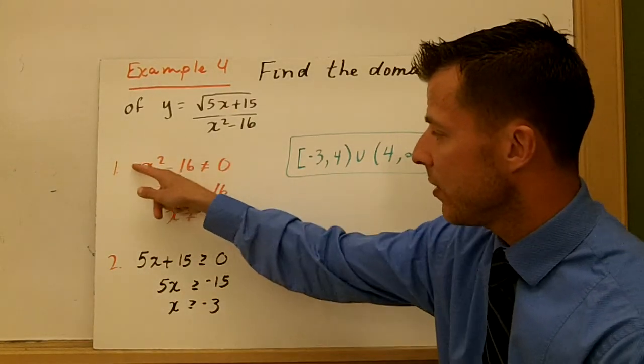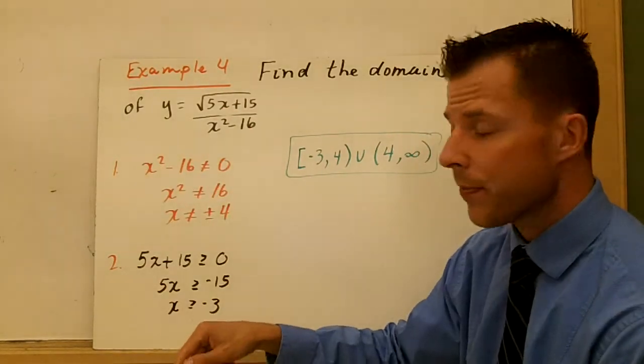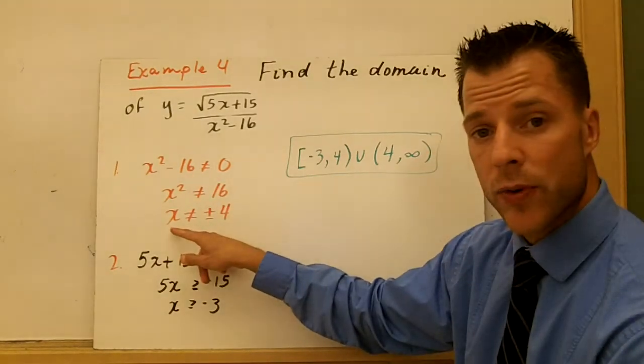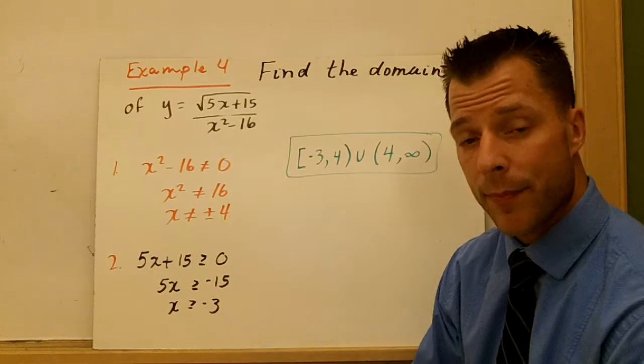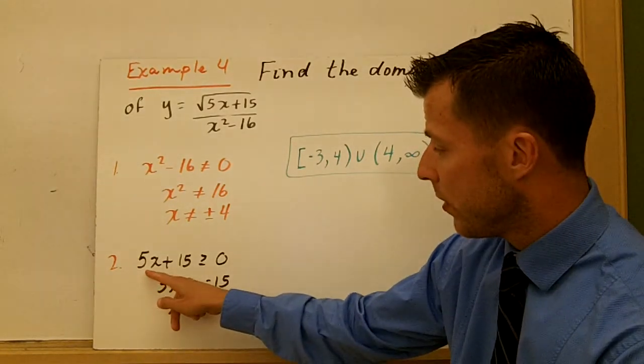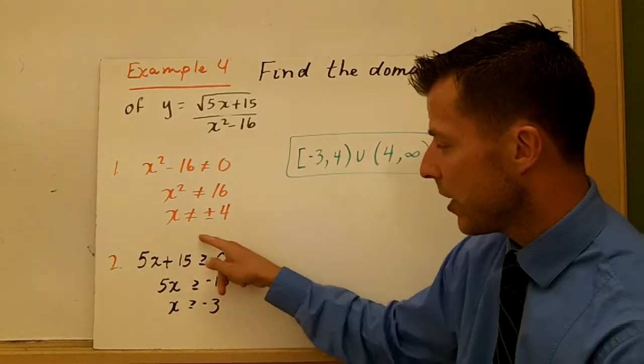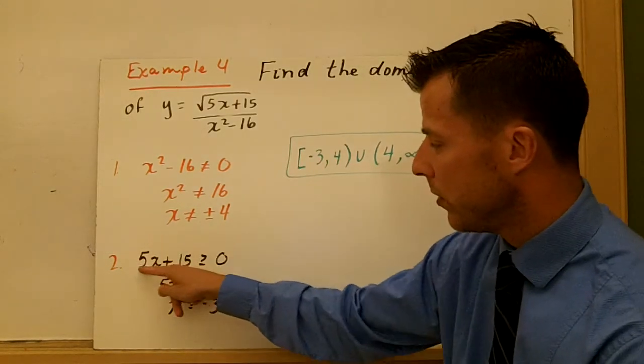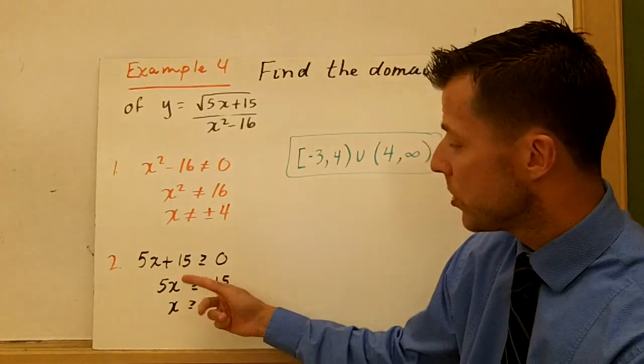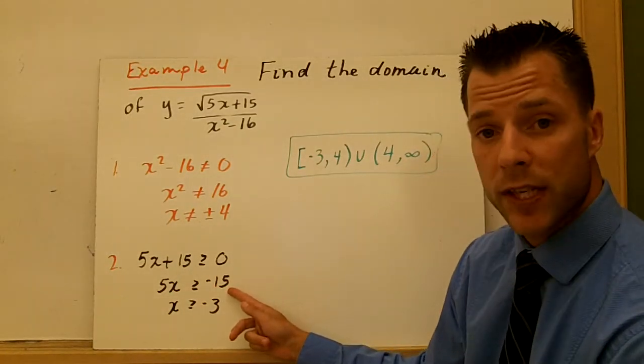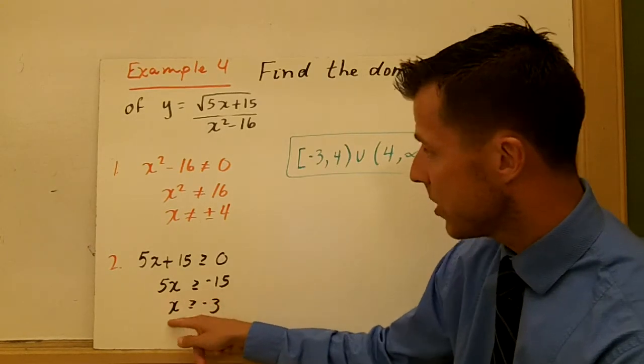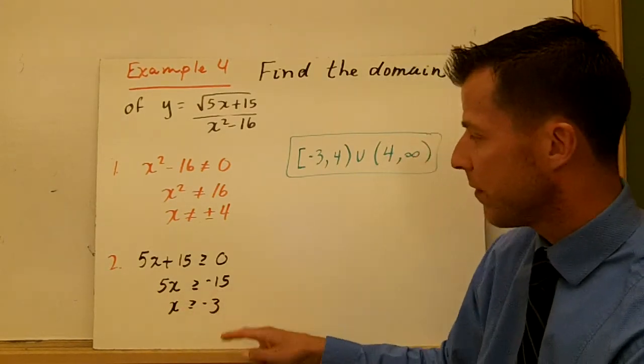So number one, we set the denominator. That denominator can't be zero. So we solve for x. We add 16 to both sides, take the square root. So x can't be plus or minus 4. Here, 5x plus 15 is greater than or equal to zero. There's our radicand. The radicand has to be greater than or equal to zero. So I subtract 15 from both sides, and I divide each side by 5. So x has to be greater than or equal to negative 3.